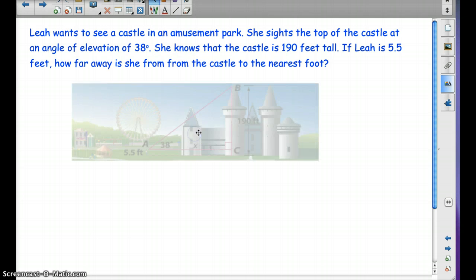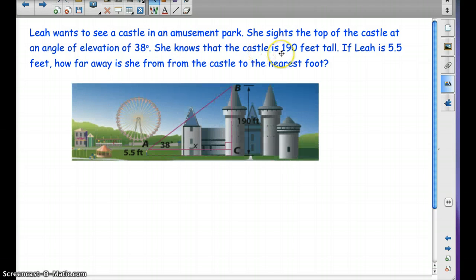Okay, I drew a picture here. Look at how good of an artist I am. Just perfect, isn't it? But, this is how your picture should look. We're going to be dealing with right triangles again. The angle of elevation was 38 degrees here. The castle is 190. Leah is standing here and she's five and a half feet tall. And, if you want to label your triangle, you can. You don't have to.